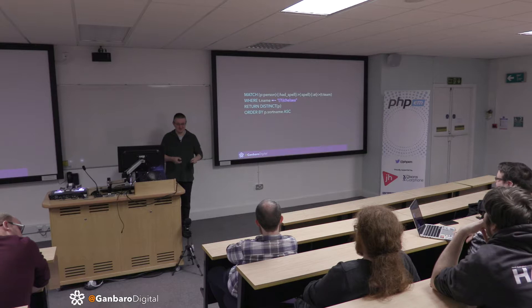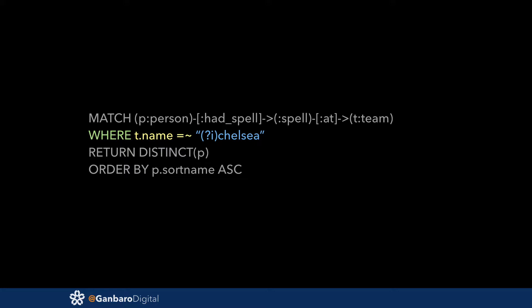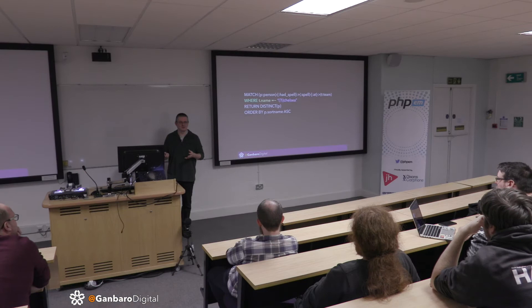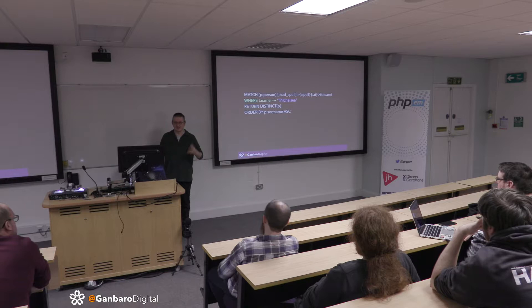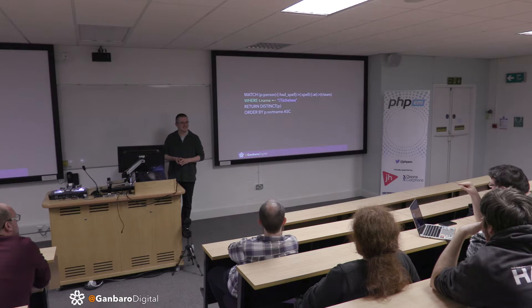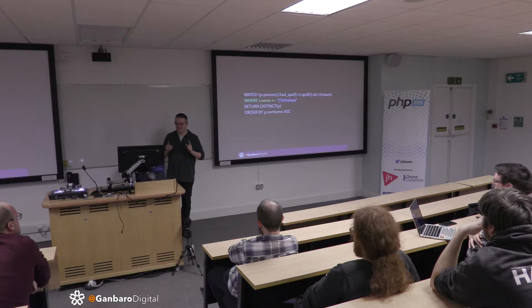There are three things I want to highlight about the query. The first is string matching: in Neo4j, string matching is case sensitive. I'm used to case-insensitive matching, so what you're forced to do is use a regex. The last thing you want to do is force all your data to be lowercase. The equals-tilde operator is how you tell it you're running a regex — it's very Ruby-esque. That's the regex match.